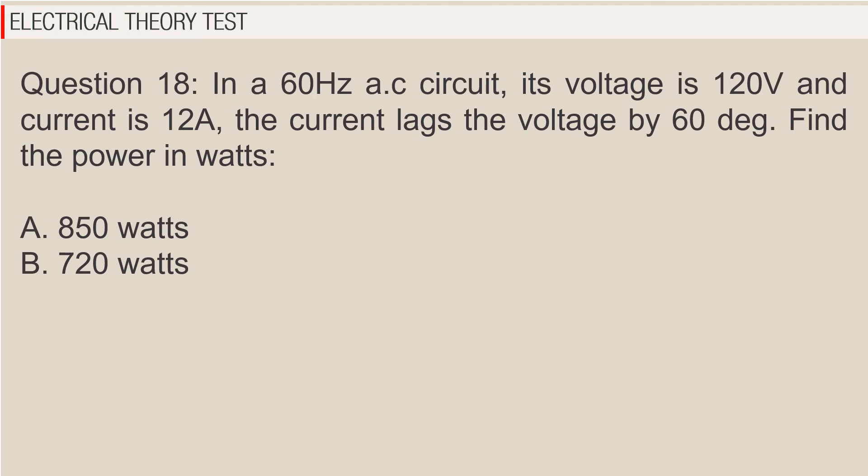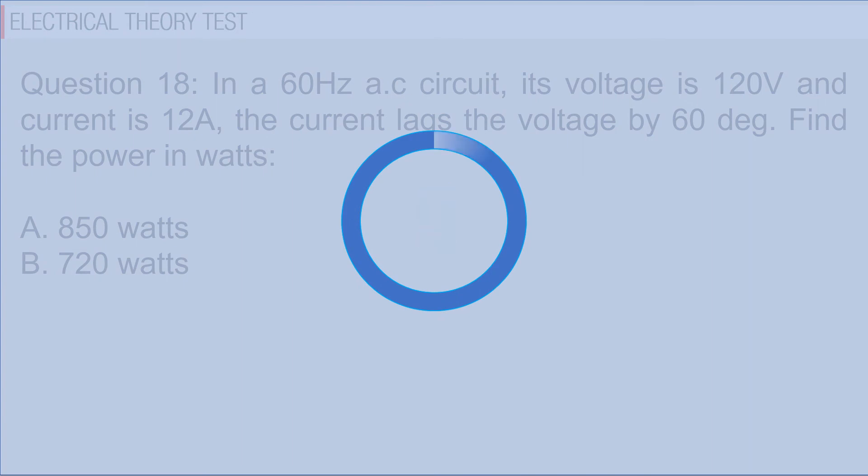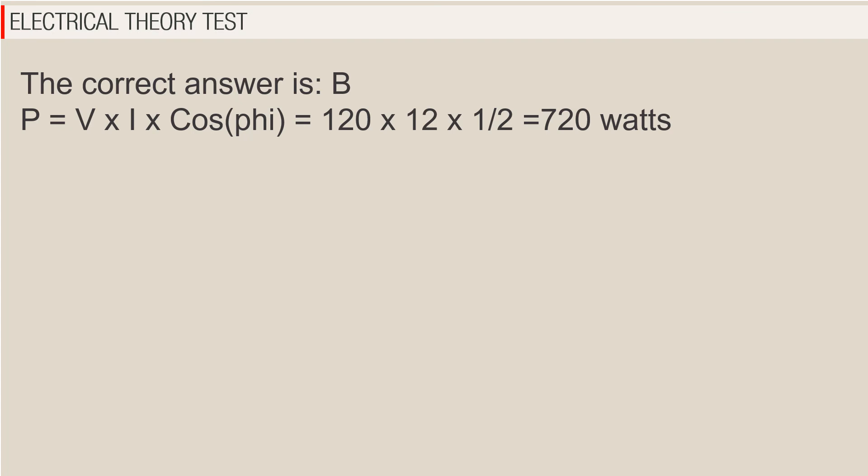Question 18: In a 60 hertz AC circuit, voltage is 120 volts and current is 12 amps. The current lags the voltage by 60 degrees. Find the power in watts. A. 850 watts, B. 720 watts. The correct answer is B. P equals V times I times cosine phi equals 120 times 12 times one half equals 720 watts.